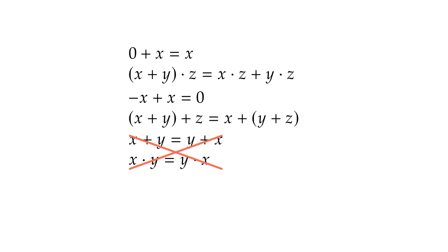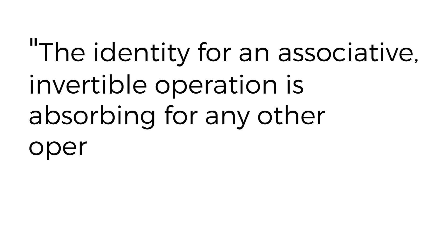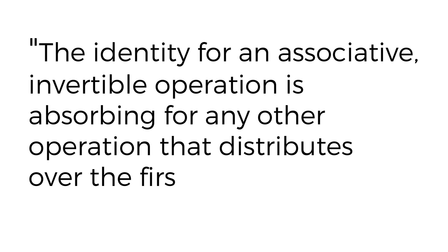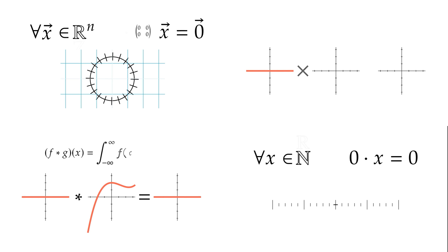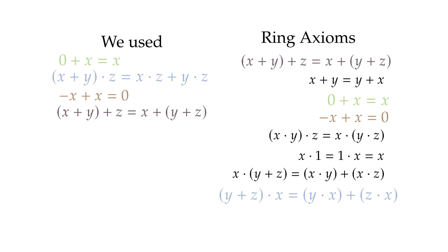If you're applying for grad school, you might describe this as the identity for an associative, invertible operation is absorbing for any other operation that distributes over the first. That's why it works for matrices, functions, convolutions, and many more. Because all these types of objects satisfy common axioms which, in particular, include the properties we need.